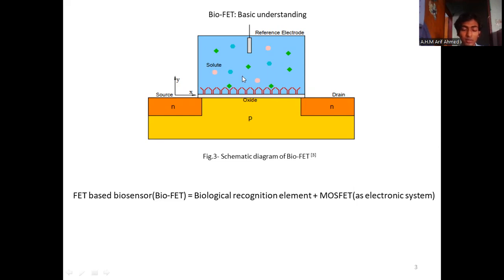When the target molecule binds with the receptors, it will change the charge distribution of that surface and corresponding electrostatic potential of that surface will also change. And due to this change, this change will act like an applied positive gate voltage. And this voltage will change the amount of current through between the source and drain terminal. And this current can be measured and the binding of analytes can be detected. So this is the underlying physics of BioFET.